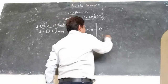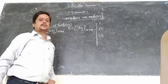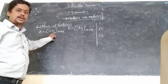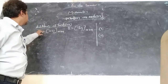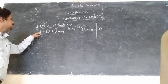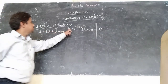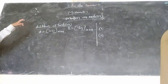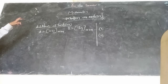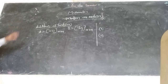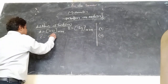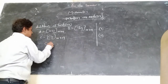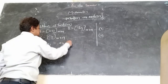The second condition is: corresponding elements should be added. Now, the definition of addition of matrices — let us consider A(ij) with order M by N and B(ij) with order M by N are two matrices of the same order. Then C(ij) is equal to A(ij) plus B(ij).